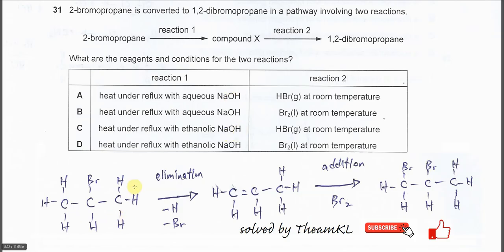Because we know that now it needs to form the 1,2-dibromopropane from this 2-bromopropane, so the 2-bromopropane, it must undergo elimination. You need to remove one H and one bromine from these 2-bromopropane to form this propene.